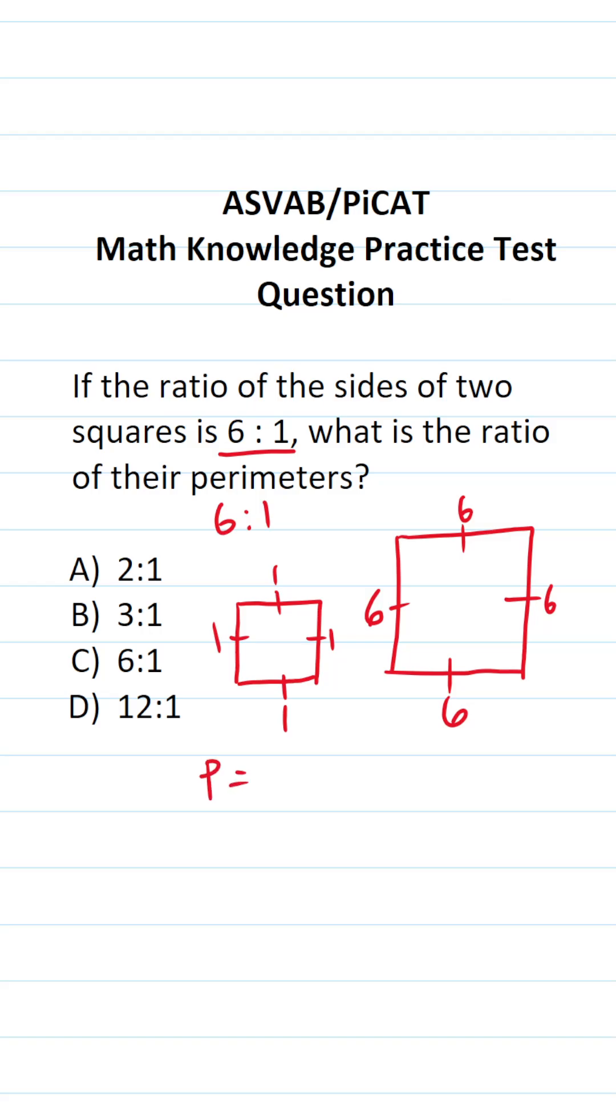How do you find the perimeter of any regular polygon? You simply add up all of its sides. So to find the perimeter of this smaller square, it's going to be one plus one plus one plus one, which is going to be four.